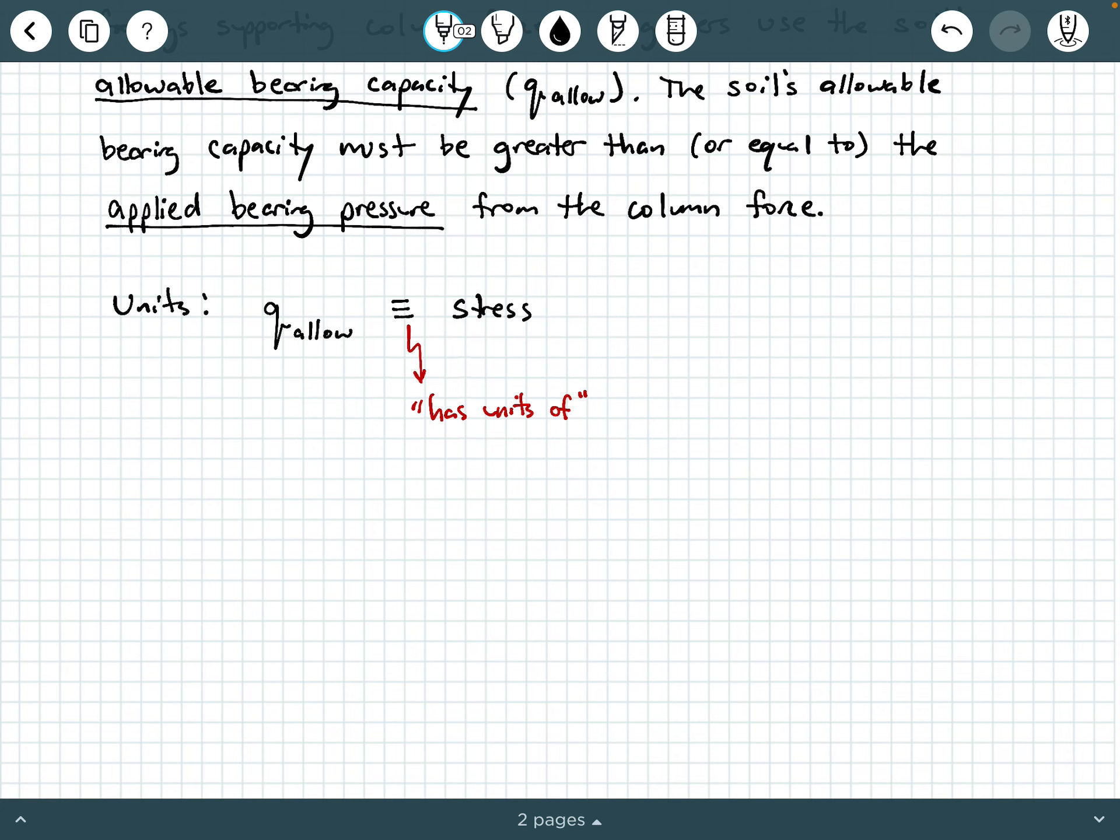So mathematically, the allowable bearing capacity, Q allowable, should be greater than or equal to the applied bearing pressure. Of course, bearing pressure, pressure is the same thing, has the same units as stress. So your applied bearing pressure also has units of stress.